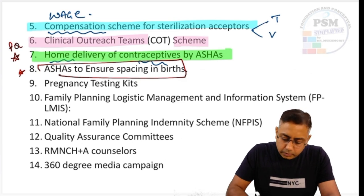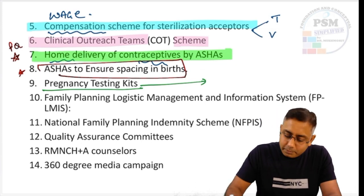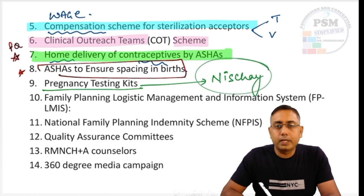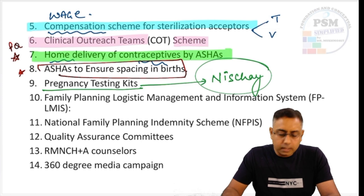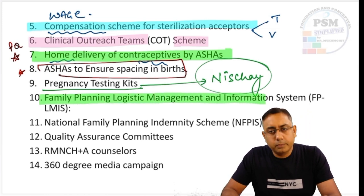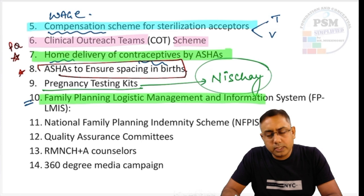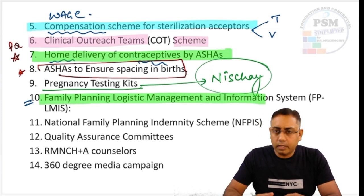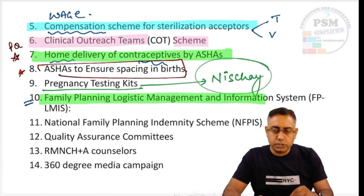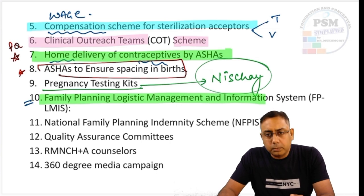Regular pregnancy testing kits — called NISCHE — are available under the Government of India scheme at the sub-center level. Family Planning Logistic Management and Information System (LMIS) is about digitalization of all records. All females under Mission Parivar Vikas will be registered and will receive added benefits such as iron folic acid under Anemia Mukt Bharat, voluntary training, vocational courses, and many other things.